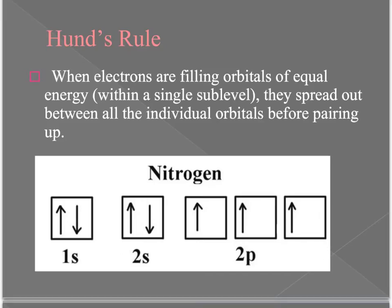The last rule is called Hund's rule. It takes advantage of the idea of like charges repelling — if electrons can space themselves out, they're going to find ways to do that to keep their repelling force to a minimum. When electrons are filling orbitals of equal energy, such as the 2p sublevel which has three orbitals, electrons will spread out between those orbitals before they pair up, because spatially this keeps them further apart within the cloud.